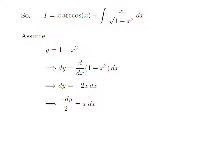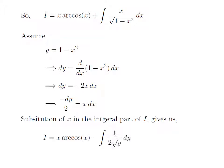Here, I have taken minus 2 to the left. So, minus differential of y divided by 2 is equal to x into differential of x. I have substituted 1 minus x squared by y, and x into differential of x by minus differential of y divided by 2, only in the integral part of I.